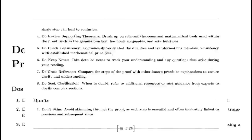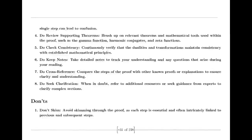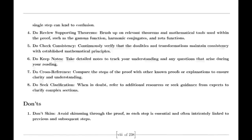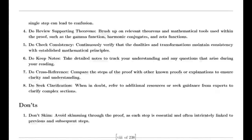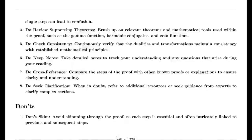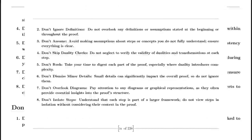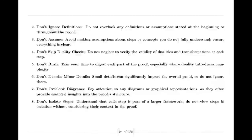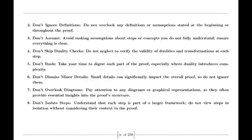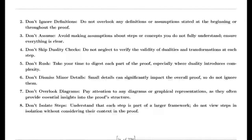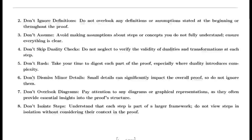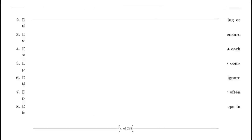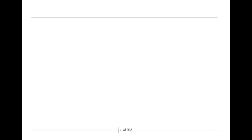Riemann's insights were not merely abstract — they opened a treasure trove of questions. He speculated about the zeros of the zeta function, points where the function takes the value zero. He famously conjectured that all non-trivial zeros lie on a critical line, a notion that would become one of the most famous unsolved problems in mathematics, known as the Riemann hypothesis.